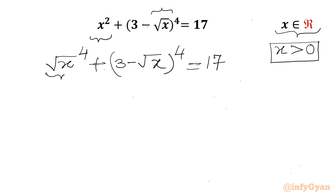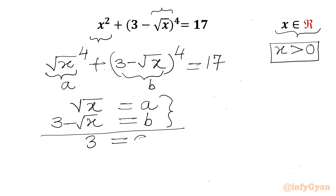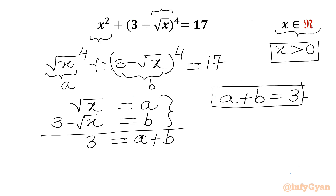Now we assume √x equals a and 3 minus √x equals b. Adding these two substitutions, the left-hand side gives 3, and the right-hand side gives a plus b. So our first equation is a plus b equals 3. Let's call this equation number 1.